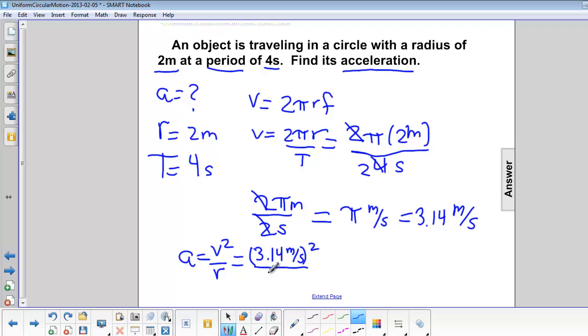And then also the radius, 2 meters. So we get 4.9 meters per second squared.